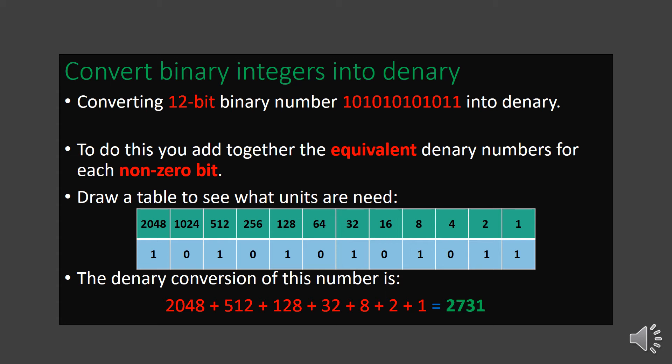On screen it shows how to convert a 12-bit binary number into decimal. A 12-bit binary number has 12 boxes. The values extend from the previous 8-bit highest value of 128: 128 multiplied by 2 gives 256, 256 multiplied by 2 gives 512, up to the highest value of 2048. We add the non-zero bit values: 2048 plus 512 plus 128 plus 32 plus 8 plus 2 plus 1, giving a total of 2731. So the equivalent decimal number for this 12-bit binary is 2731.